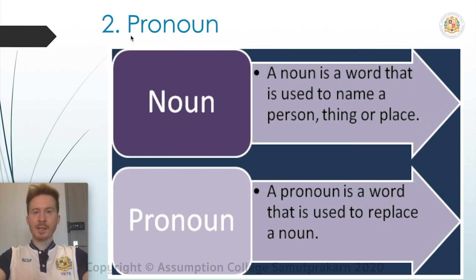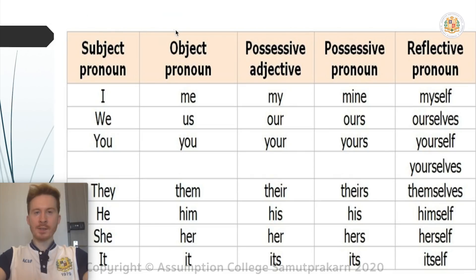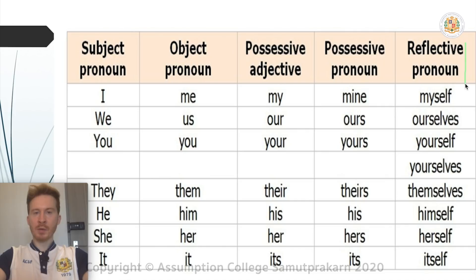Now let's take a look at pronouns. If a noun is a person, thing, or a place, a pronoun is a word that is used to replace a noun. We have different types of pronouns: subject pronouns, object pronouns, possessive adjectives, possessive pronouns, and reflexive pronouns.